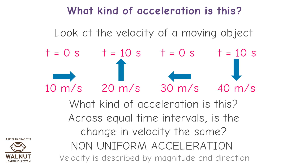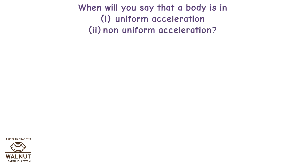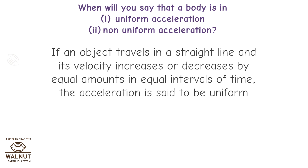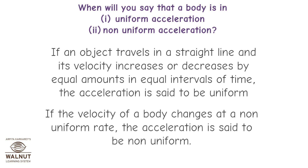Velocity is described by magnitude and direction. If an object travels in a straight line and its velocity increases or decreases by equal amounts in equal intervals of time, the acceleration is said to be uniform. If the velocity of a body changes at a non-uniform rate, the acceleration is said to be non-uniform.